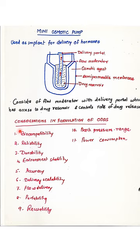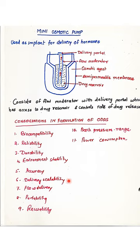Certain important aspects need to be considered while designing such delivery systems, which are simple to look at but complex to formulate, design, and manufacture on a commercial scale. These include the extent of biocompatibility — since some carriers or chambers are of the non-biodegradable type — reliability of the extent and rate of drug release, durability of the systems once administered, stability in the environment, accuracy of dosage, scalability of delivery, flow delivery, portability, reusability, extent of back pressure exerted once in-situ, and the power consumed — especially in systems like the mini osmotic pump.